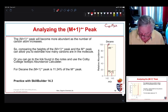Look how much bigger our M plus 1 peak is. That's because now we have a much higher probability of having at least one C13 isotope in our molecule because we have 10 times as many carbon. So we actually expect this to be 10 times bigger than it was for the methane peak. So the M plus 1 peak will become more abundant as the number of carbon atoms increases.